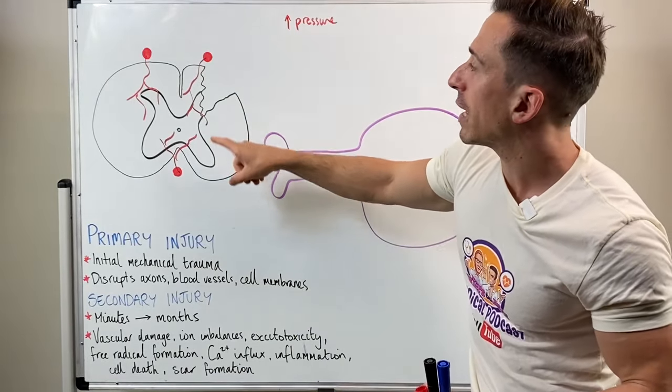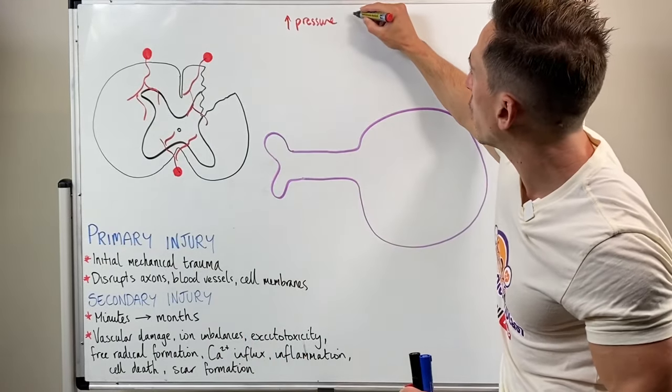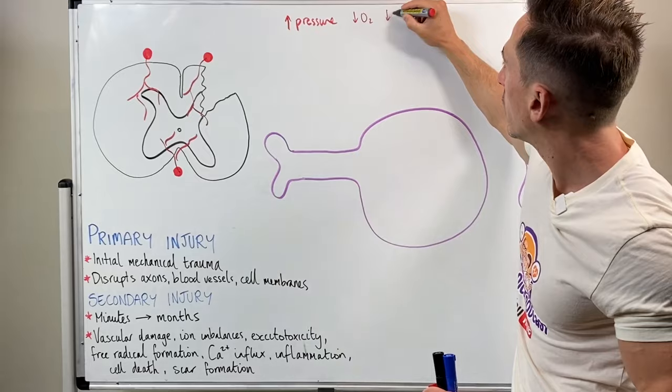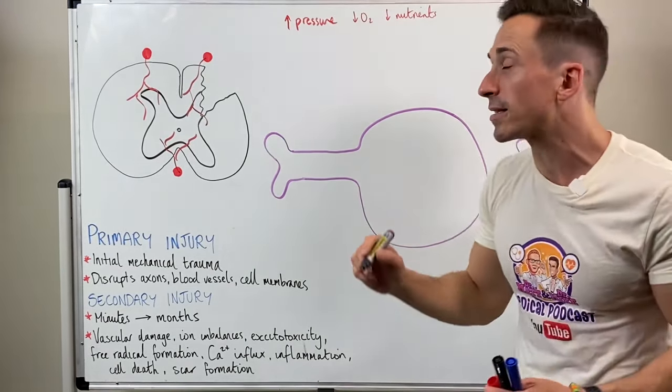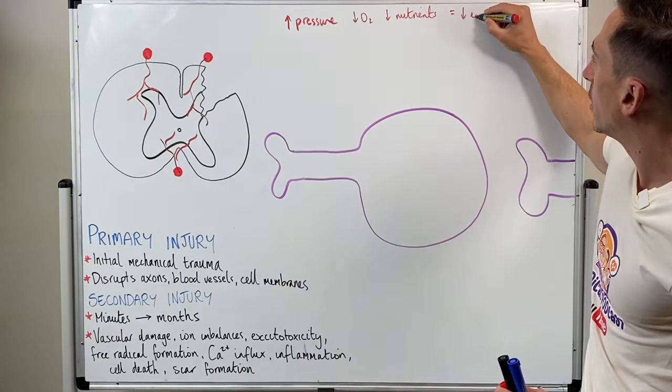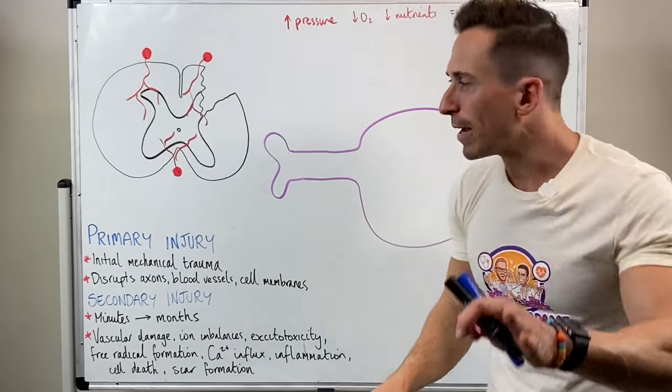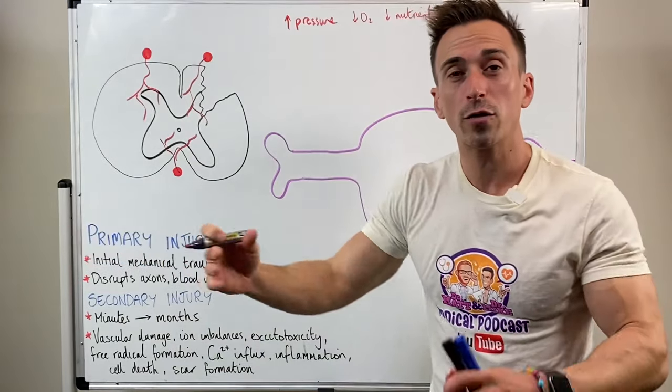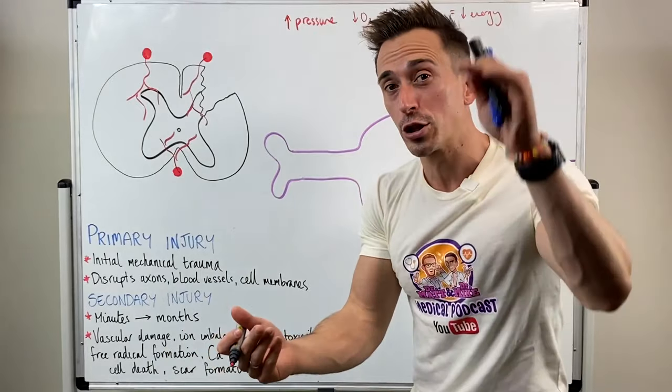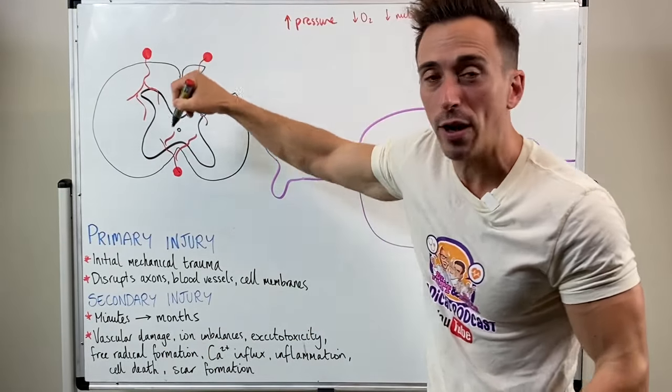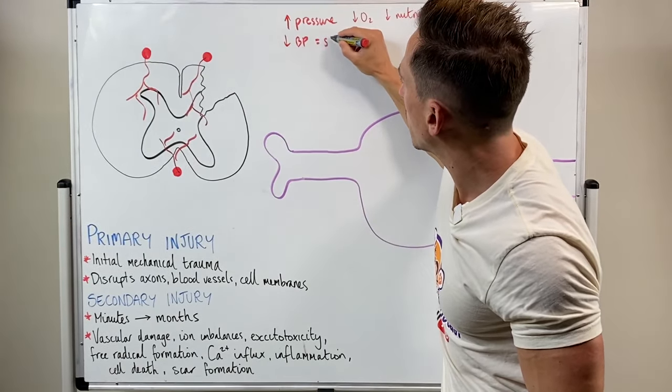But what about the cells that usually get fed by these broken blood vessels? They're no longer getting fed, so that means these cells no longer get oxygen and they no longer get nutrients. If they don't get oxygen and nutrients, it means the cells no longer make energy. And without energy, many of the processes of the cells stop. But think about this—if blood is leaking out, you've got around about five to six liters of blood inside your body. If that blood leaks out, your blood pressure drops.